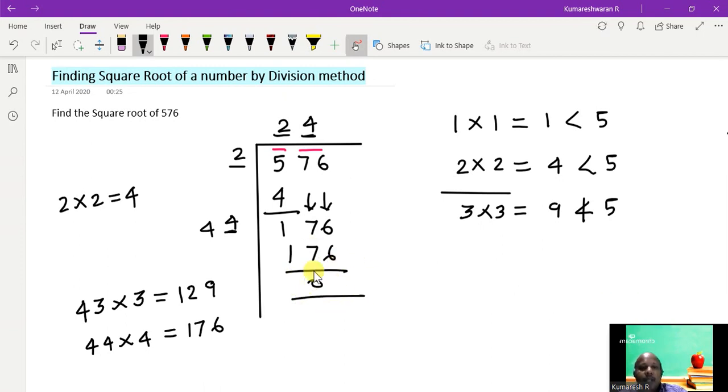So since I get the remainder as 0, whatever I have in the quotient is the square root of the given number. Therefore we can say square root of 576 is equal to 24. This is the answer.